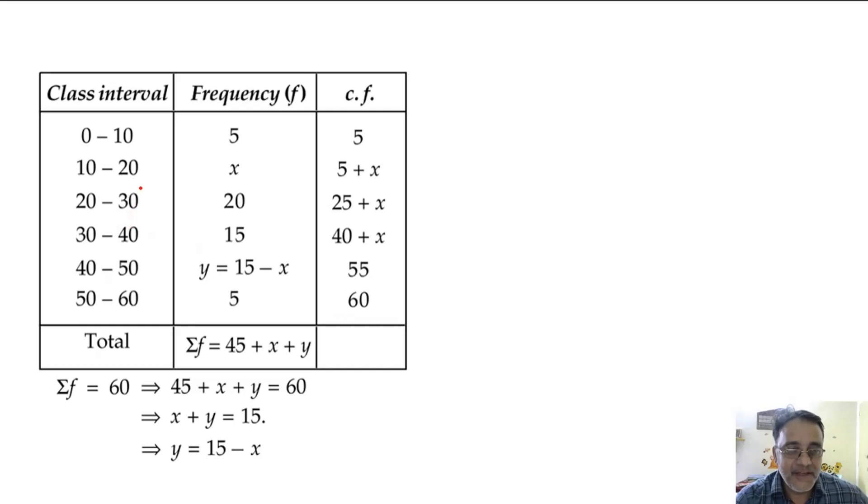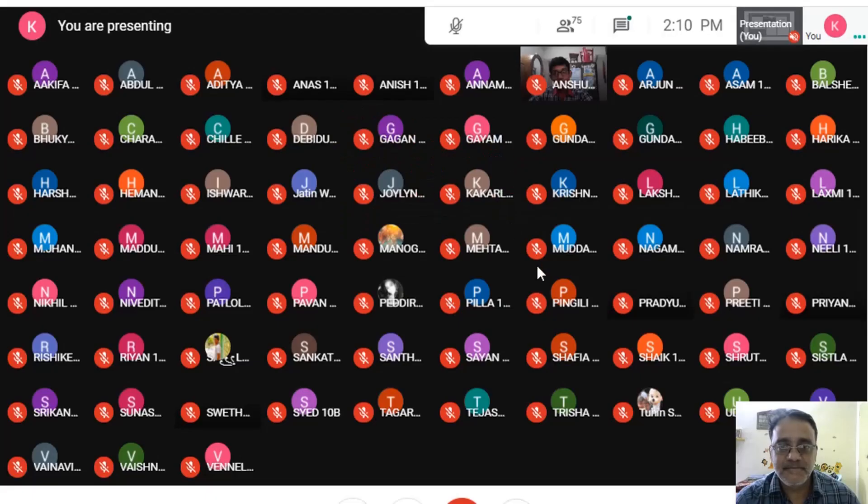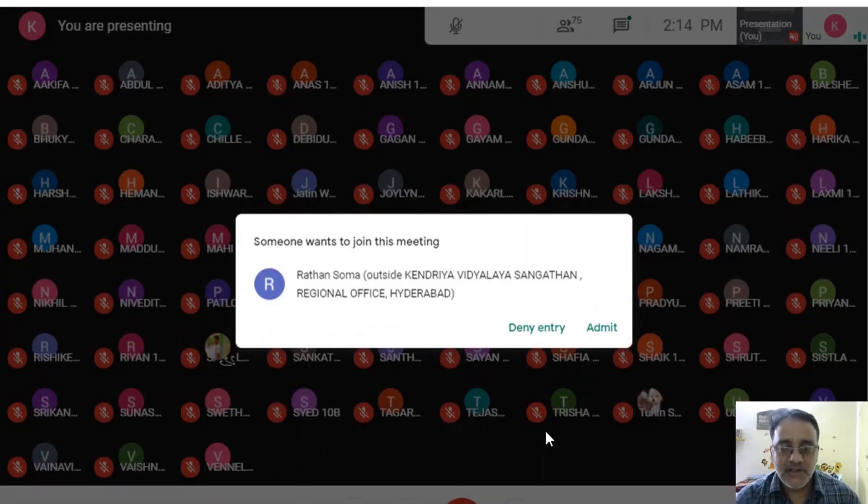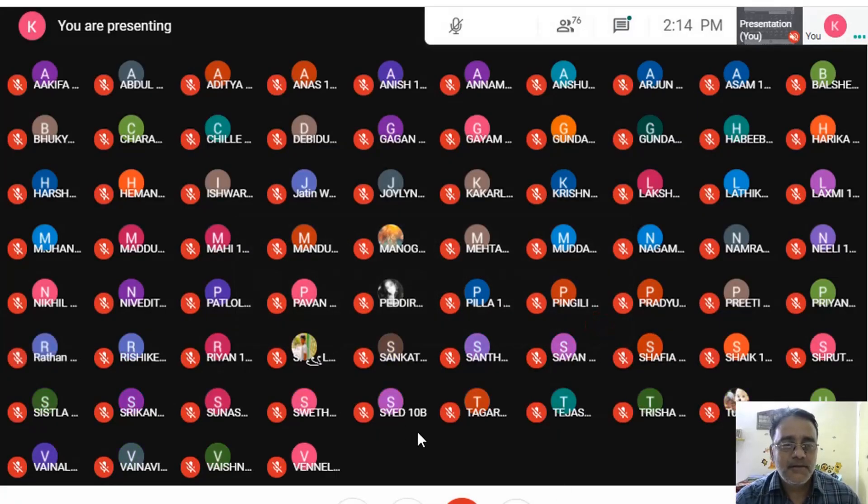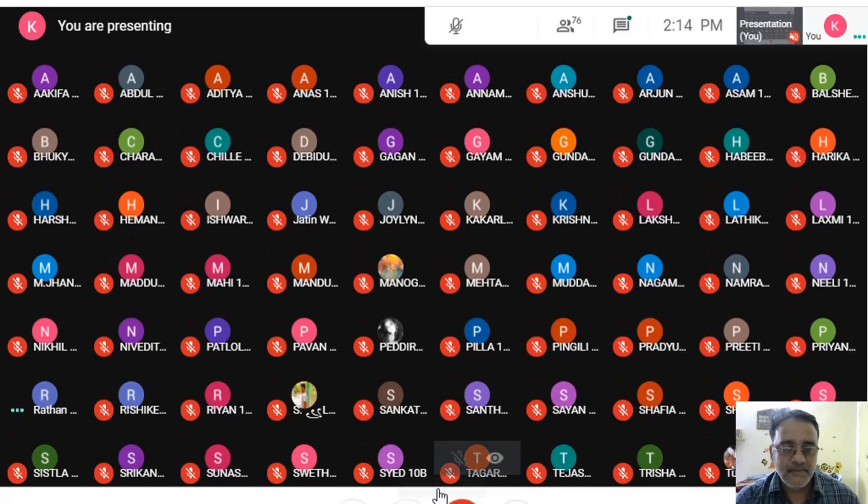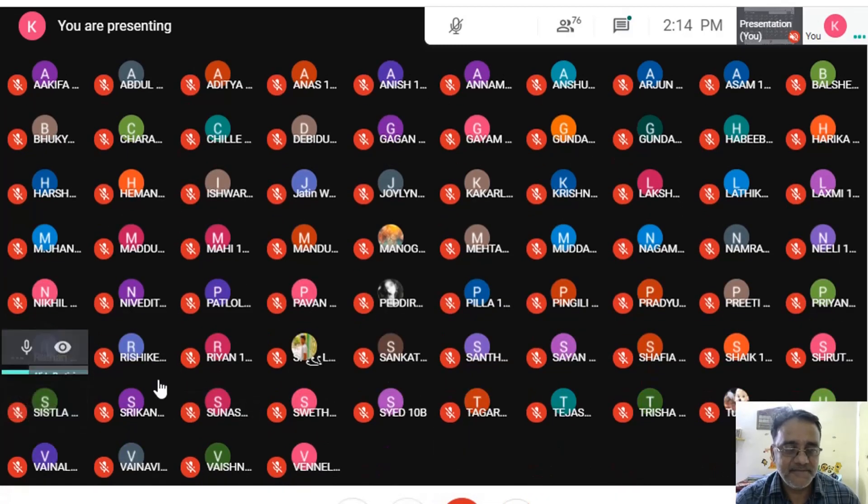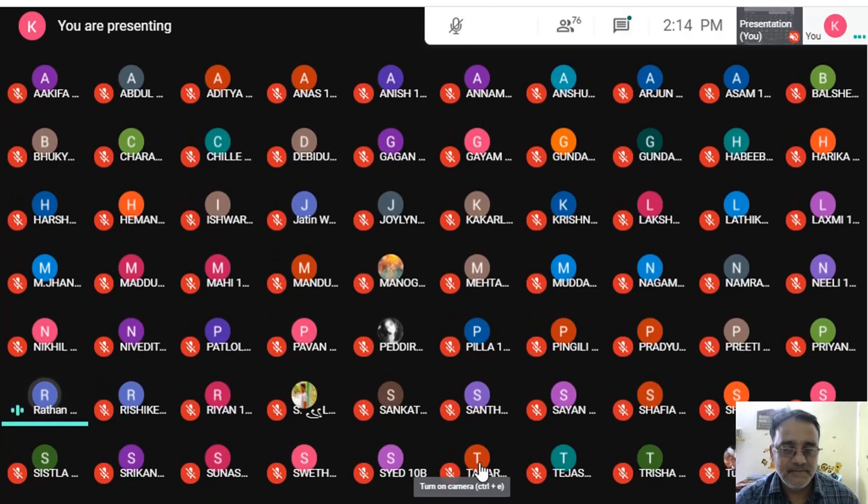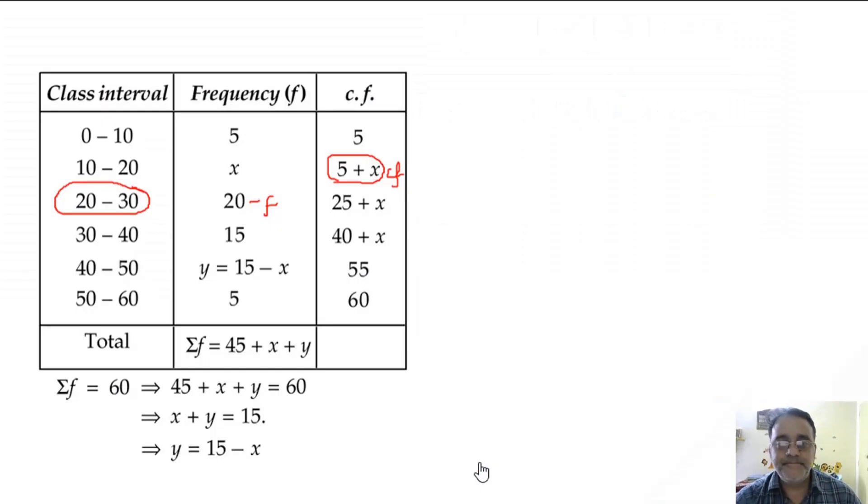And what is the median class here? 20 to 30. So this will be our f and this will be the CF.